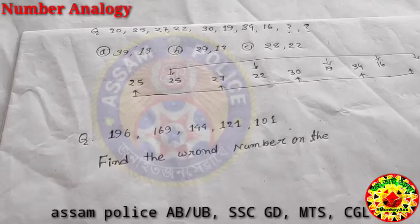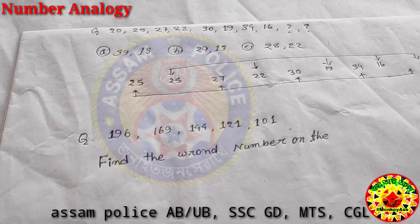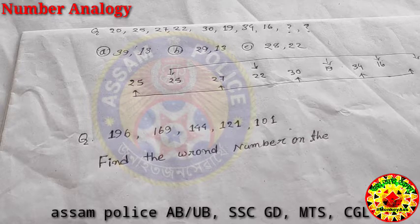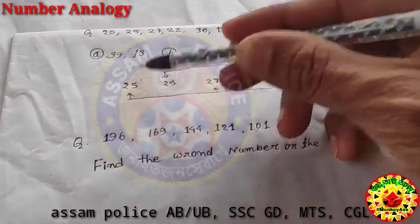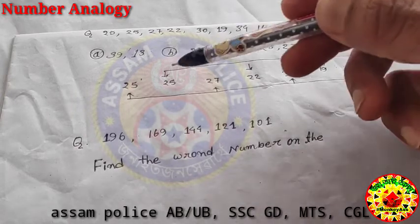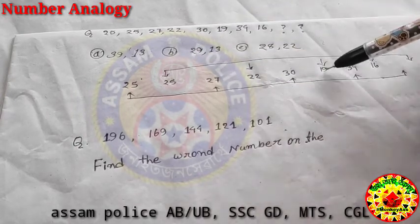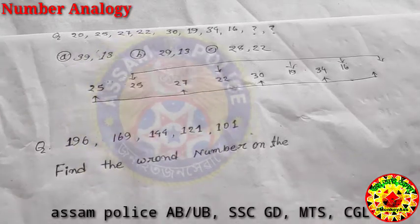Next question: 25, 25, 27, 22, 30, 19, 34, 16. Find the pattern. This series actually has two interleaved series. Looking at 25, 27, 30, 34 — one series. And 25, 22, 19, 16 — another series. So we analyze the relation: 25 to 27, 30, 34 going up; and 25, 22, 19, 16 going down.